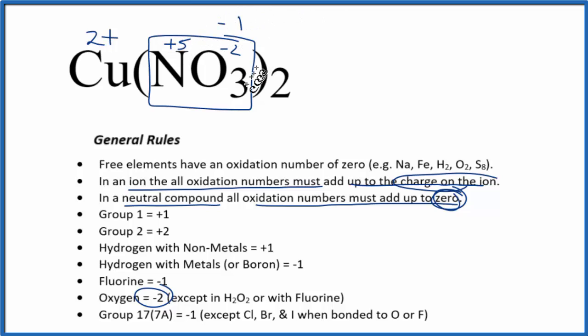Positive 5, that should work. So we have minus 6 plus 5, that gives us the minus 1. So the oxidation number on the nitrogen is plus 5. And oxygen, minus 2. So each oxygen here is minus 2. So that's it. These are the oxidation numbers for Cu(NO₃)₂, copper 2 nitrate.